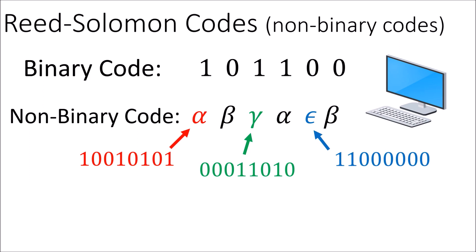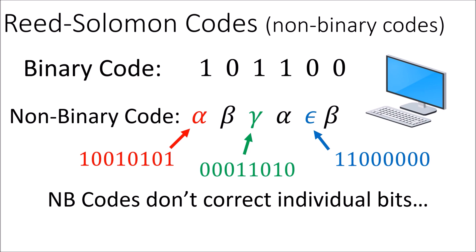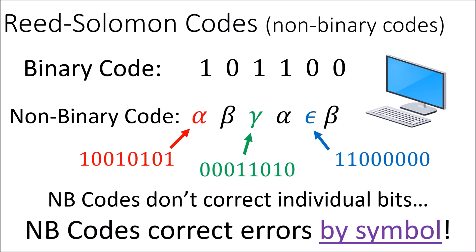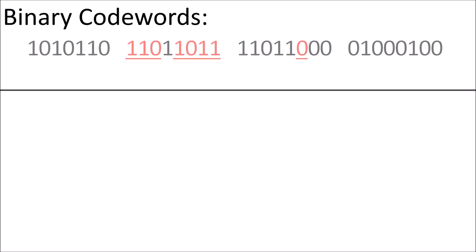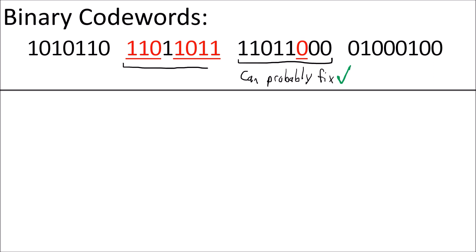Here's the key point: non-binary codes do not correct individual zeros and ones that contain errors. Instead, non-binary codes will correct an entire symbol at once. Let's say that we're using the standard binary codes that we've seen before. We have some binary codewords, and the errors are underlined and highlighted in red. This codeword has only one error bit inside, so we can probably fix it. But this codeword has seven error bits inside, and this is too many errors for us to fix, so these errors can't be corrected with these binary codewords.